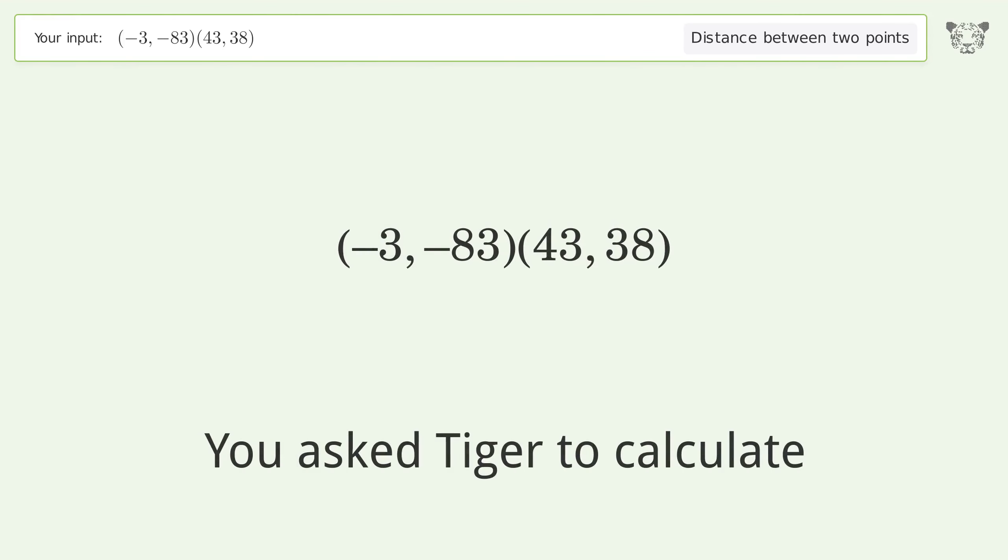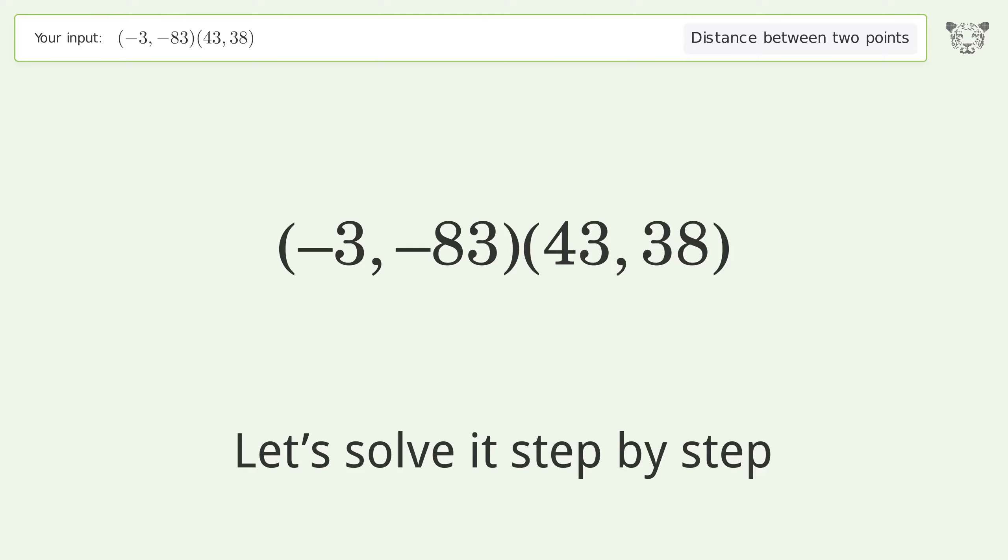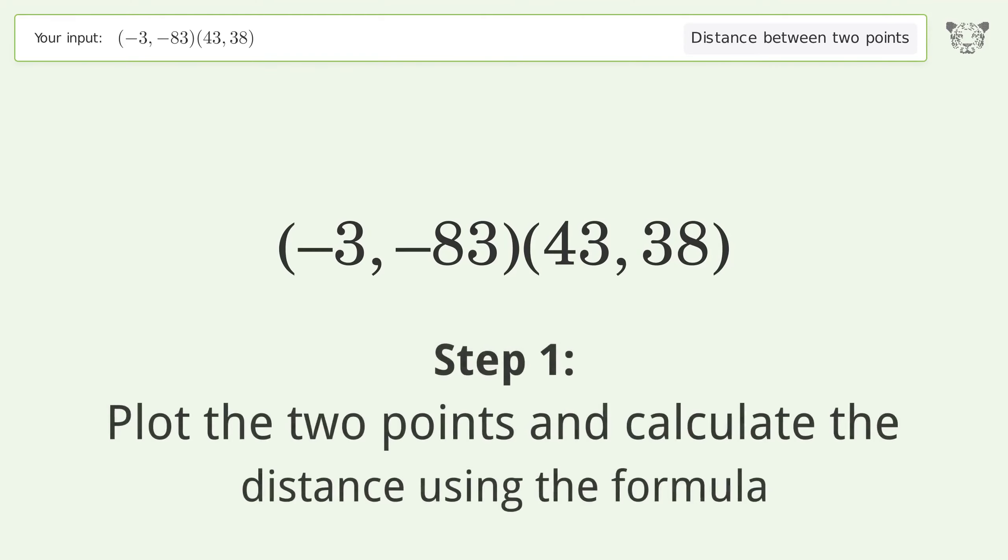You asked Tiger to calculate this. This deals with the distance between two points. The distance between the two points is the square root of 16757 or 129.449. Let's solve it step by step. Plot the two points and calculate the distance using the formula.